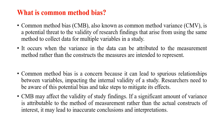Third, common method bias is a concern because it can lead to spurious relationships between variables, impacting the internal validity of a study. Researchers need to be aware of this potential bias and take steps to mitigate its effects. Lastly, common method bias may affect the validity of study findings if a significant amount of variance is attributed to the method of measurement rather than the actual construct of interest, potentially leading to inaccurate conclusions. These points are important when designing studies that require the use of self-report measures.